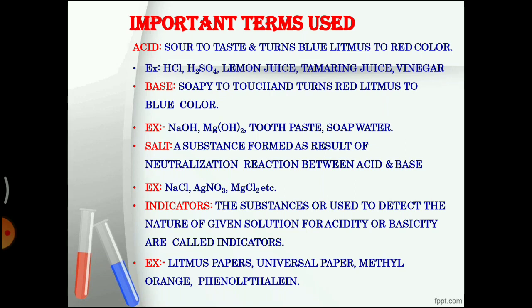We use the term indicators regularly in this chapter. An indicator is a substance used to detect the nature of a given solution for acidity or basicity. We have many types of indicators: litmus papers (red litmus, blue litmus), universal indicator paper, methyl orange indicator, and phenolphthalein indicator.